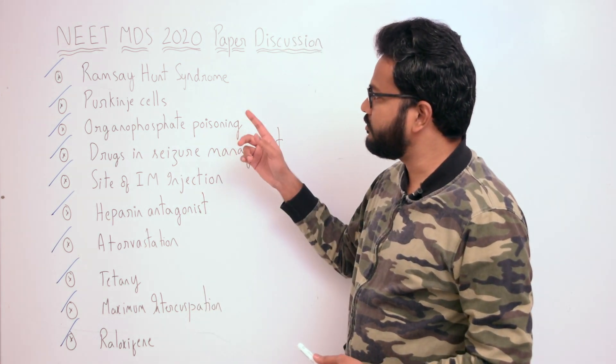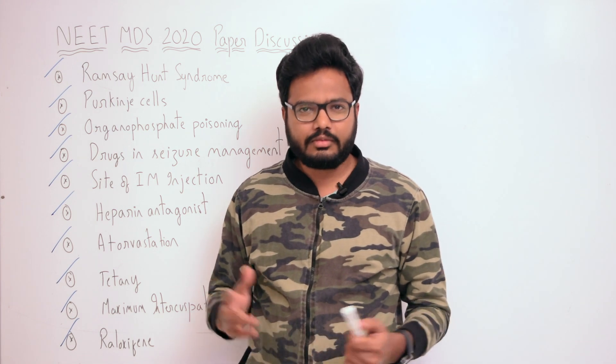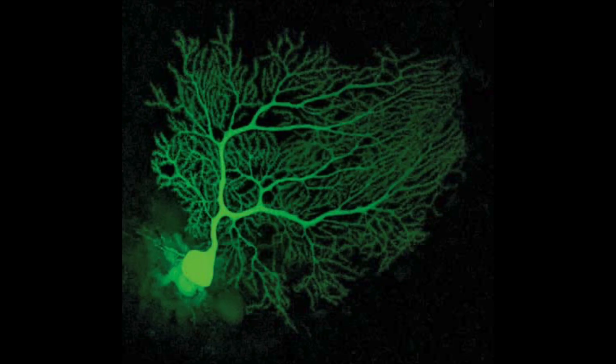Moving on to Purkinje cells. There are several layers in the cerebellar gray matter: the outer molecular or plexiform layer, the intermediate Purkinje layer, and the inner granular layer. As seen in the image, there are flask-shaped cells which are Purkinje cells. The Purkinje layer sits between the outer molecular and inner granular layers — it is the thinnest layer, having a single layer of flask-shaped Purkinje cells, which are the largest neurons in the body.